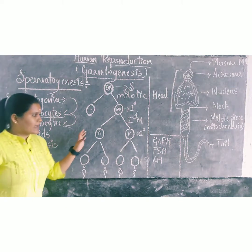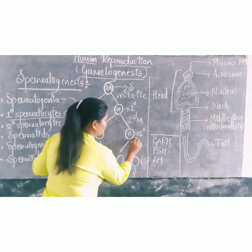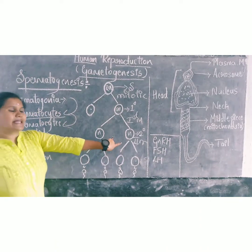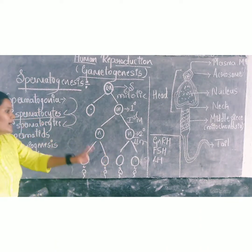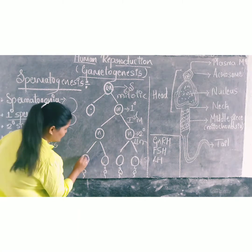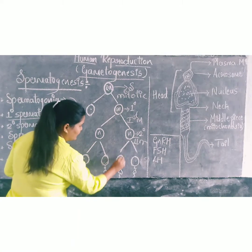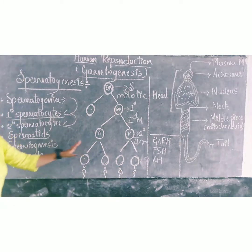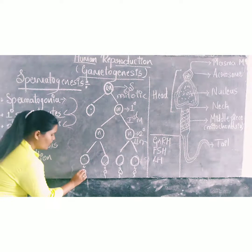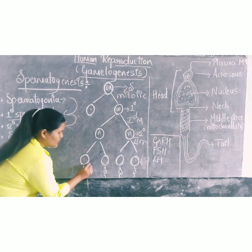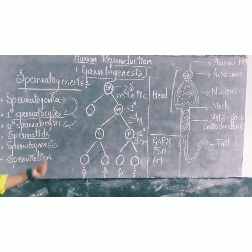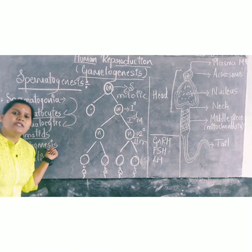After this, the secondary spermatocytes undergo the second meiotic division. The secondary spermatocytes undergo second meiotic division and form the spermatids. These are the spermatids. After that, these spermatids transform into the sperms. This process is called spermiogenesis.